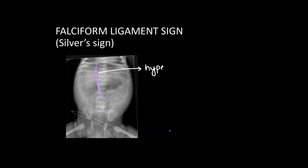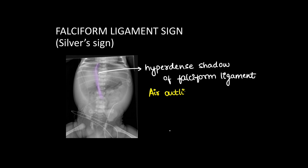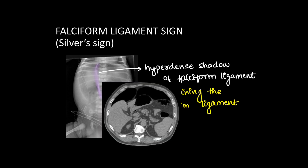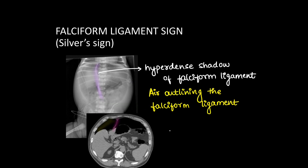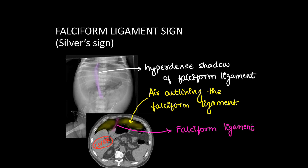Next we have the falciform ligament sign, also known as the silver sign. In this x-ray we can see the hyperdense shadow of the falciform ligament. The falciform ligament attaches the anterior surface of the liver to the anterior abdominal wall, and when air outlines this ligament it is separately seen — surrounded by air on either side and hence very well visualized on the AP x-ray.